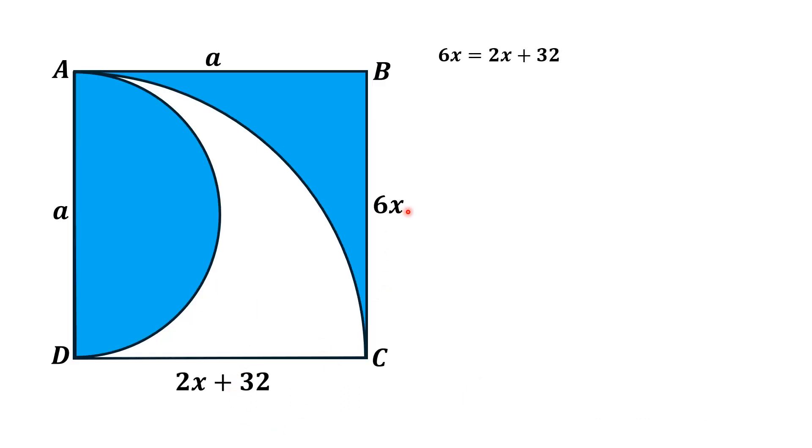First of all, we take this option that sides of the square are equal. So 6x is equal to 2x plus 32. Taking 2x to the left, we will have 4x is equal to 32. Dividing both sides by 4, we will get x is equal to 8. And since A, which is the side length of this square, is equal to 6 times x, from here A is equal to 48.